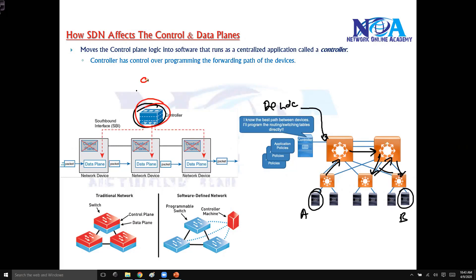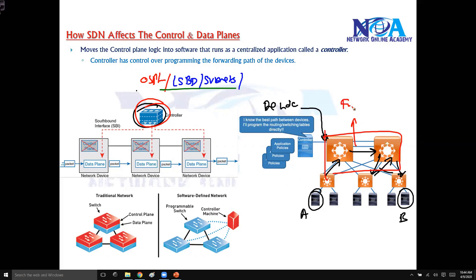The controller is going to do all the tasks — learning the routes, maintaining the link state database when it comes to OSPF routing, or the number of subnets you have in your network. The controller has all the information about the network and also the best paths to be used from one particular device to another. Networking devices don't learn any information; we are moving that learning part to the controller.